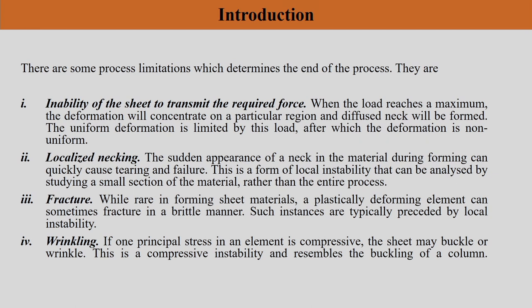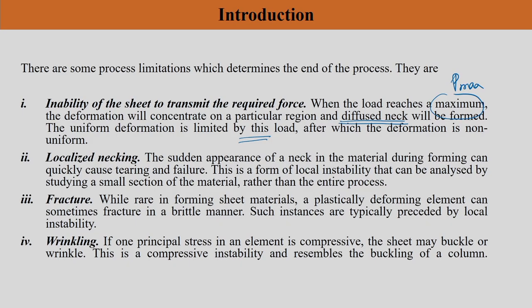Instability can be a variety of types. One is when the load reaches a maximum, the deformation will concentrate on a particular region and a diffuse neck will be generated. The uniform deformation is limited by this load — that is P max — after which deformation is going to be non-uniform. Once you reach that particular stage, we are going to have diffuse necking. Diffuse necking means the neck is generated over a larger gauge length, larger span. And the moment this happens, uniform deformation is going to cease, after which you are going to have non-uniform deformation — that we already discussed in the first section.